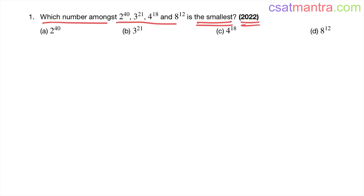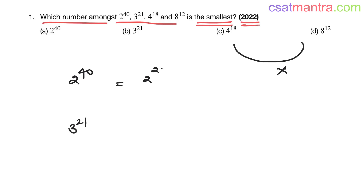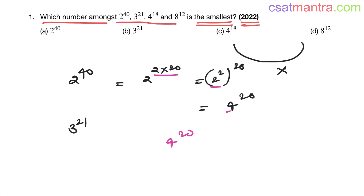There is another way to look at this problem. After eliminating 4 power 18 and 8 power 12, we are left with 2 power 40 and 3 power 21. We can rewrite 2 power 40 as 2 power 2 into 20, which is 4 power 20, using the rule a power m whole power n.